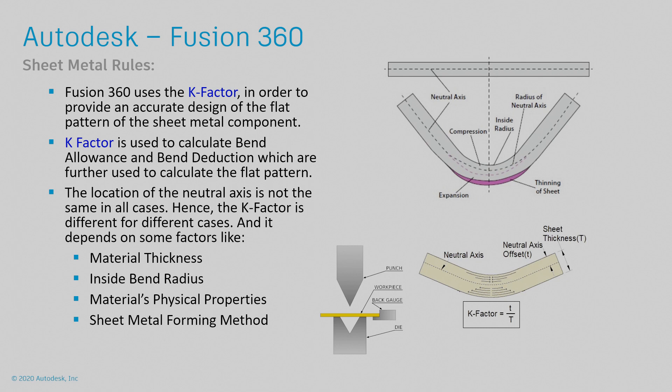Now there's a few factors that take place on being able to set up and find that k-factor for different materials. It could be determined by the material thickness, the inside bend radius, the material's physical properties, or the way that we're actually bending the material in the forming method.